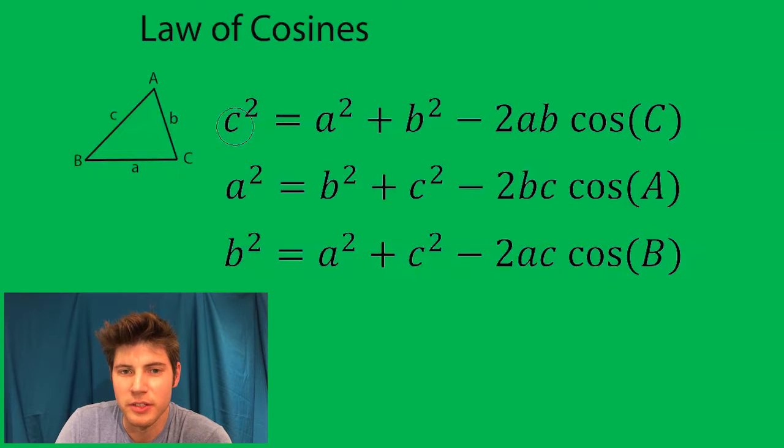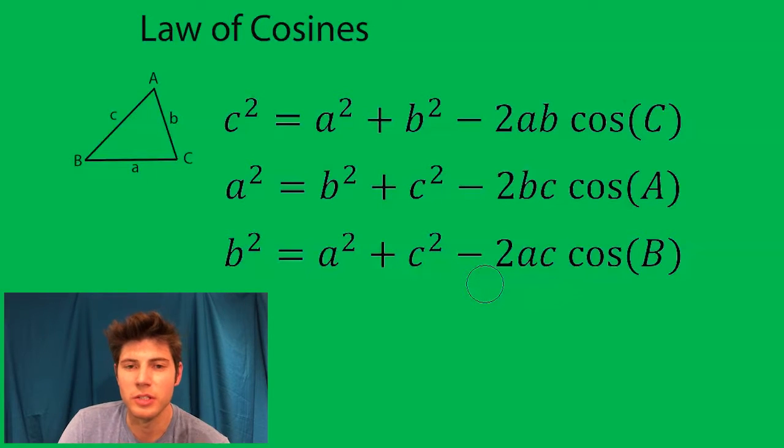So the way this formula works is you plug all these things in for either c, a, or b. Notice that this c matches this C, this a matches this A, and this b matches this B. Then the other letters are on the inside, so really you technically only need one of these formulas.